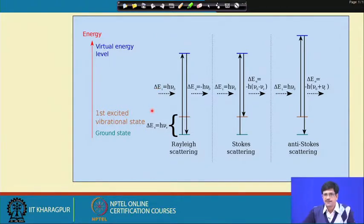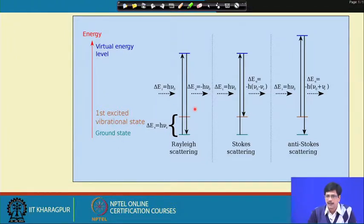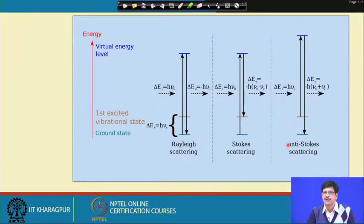Inelastic scattering results in either Stokes or anti-Stokes scattering. In Stokes scattering, the emitted electromagnetic wave has a lower frequency and lower energy compared to the incident wave, and the excess energy is given off to the vibrating molecule, which now vibrates with a higher frequency. In anti-Stokes, the bond is already in an excited vibrational state and gives its energy to the incident electromagnetic wave, which is emitted with a higher frequency and higher energy.